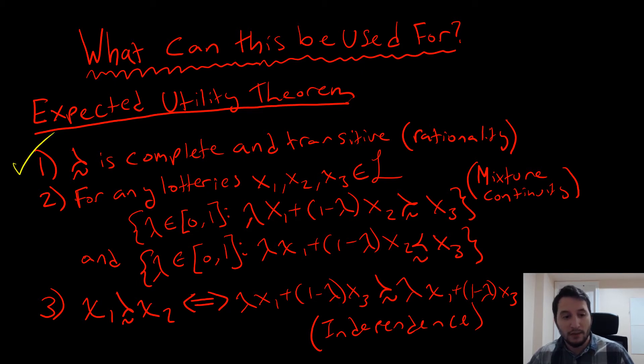First, we need our preferences to be rational. The second one is that for any lottery x1, x2, and x3, and L, we need this thing called mixture continuity.